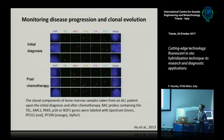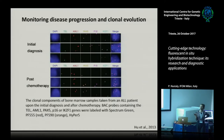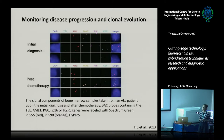In situ hybridization can also be a good method to monitor disease progression and clonal evolution. These are cells from patients with acute lymphoid leukemia. You can see cells from bone marrow at initial diagnosis and cells after the first chemotherapy round. Thanks to this, we can see which clones of malignant cells persist after chemotherapy, and this can help us personalize chemotherapy in a better way.